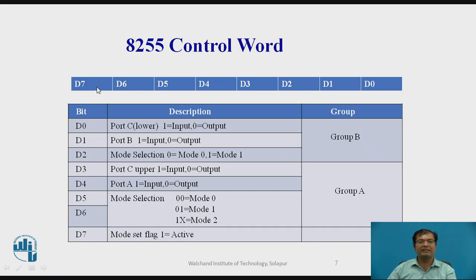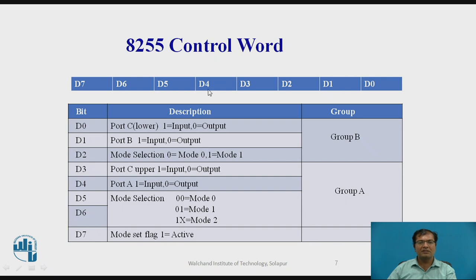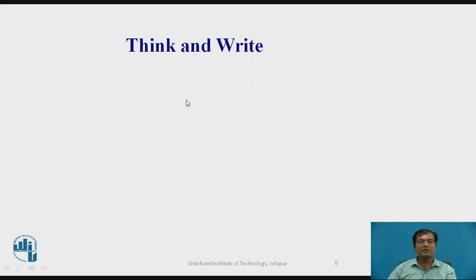Lastly, bit D7 is the mode set flag. If it is 1, then it is in IO mode; if it is 0, then it is in bit set and reset mode. So bits D0 and D1, which are port C lower and port B, fall under group B. And port C upper and port A are controlled by group A. This covers the input-output mode.